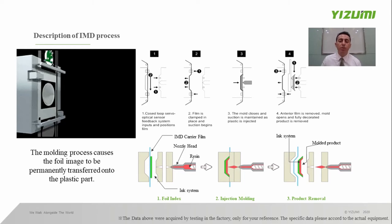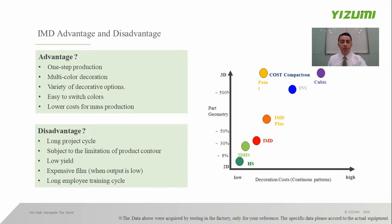This IMD process is relatively compact and has both advantages and disadvantages. The first advantage is one-step production, combining injection and decoration into one step — decorating is completed when injection is complete, and the surface is endowed with patterns and texture. The second advantage is multi-color surface decoration, as a variety of colors can be printed on the film. The third advantage is the possibility of providing metallic texture on the product surface. The fourth is quick color switching — color can be changed simply by changing the film. The fifth advantage is mass production at low cost, as films are printed in large quantities at low cost.